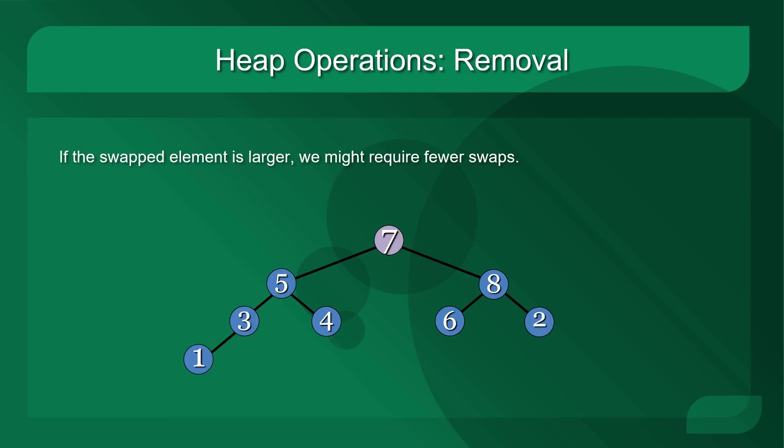What if the swap element were larger? If instead of 1 we used a 7, we might not need as many swaps to sink it down. In this case, we swap 7 with its larger child, which is 8. After that, the max heap property is restored because 7 is now larger than both of its children. In this case, only one swap was needed to restore the max heap property.